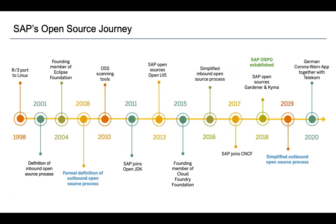For us, managing open source is mainly about continuous improvement. That is why in 2018, when we established our OSPO, one of our first activities was to analyze the status of our open source management processes and tools. SAP's open source journey started mainly with open source consumption, as is probably the case for most companies, and accordingly in 2001 we already defined our inbound process in a formal way.